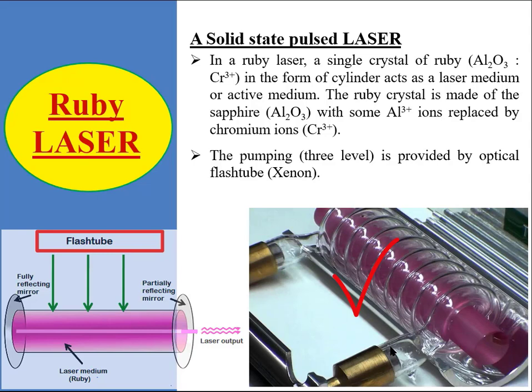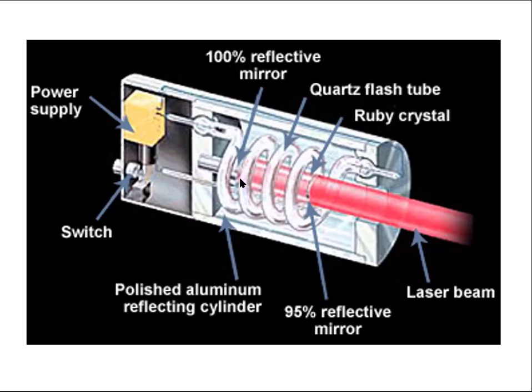The pumping energy is initially provided optically by a xenon flash tube. In the real ruby laser, the ruby crystal has the xenon flash tube wrapped around it. The ruby rod is polished at both flat parallel ends. The reflection is 100% for incident photons at one end and 95% at the other end. These reflecting surfaces make the laser cavity for stimulated emission to happen.